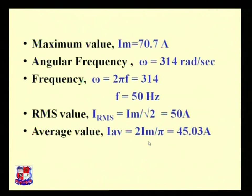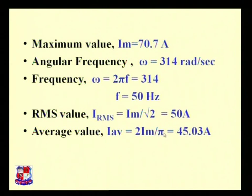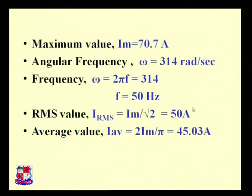For the average value, the equation is 2 × I_m divided by π. The maximum value of current I_m is 70.7 ampere and π is 3.14. Solving the equation we get the average value equal to 45.3 ampere. Note that the average value is always less than the RMS value.